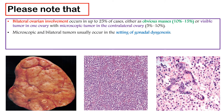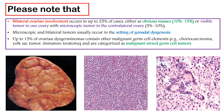Microscopic and bilateral tumors usually occur in the setting of gonadal dysgenesis. Up to 15% of ovarian dysgerminomas contain other malignant germ cell elements, such as choriocarcinoma, yolk sac tumor, immature teratoma, and are categorized as malignant mixed germ cell tumors.